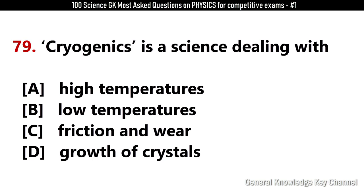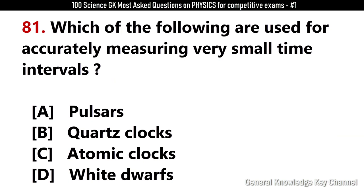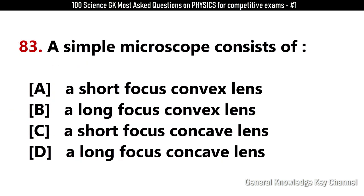Cryogenics is a science dealing with? Answer B: Low temperature. A fountain pen works on the principle of? Answer B: Capillary action. Which of the following are used for accurately measuring very small time intervals? Answer C: Atomic clocks. Danger signals are generally red as red light? Answer B: Undergoes least deviation. A simple microscope consists of? Answer A: A short focus convex lens.